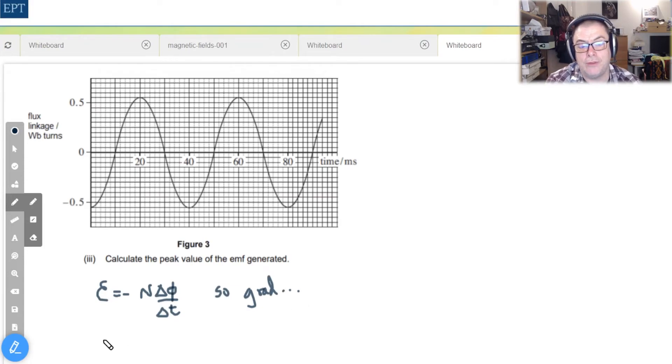We're going to recall that N φ flux linkage is actually equal to B A N times the cosine of the angle θ at which the coil is sitting.